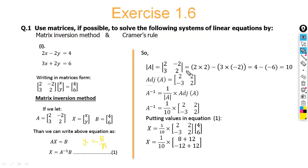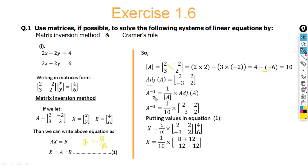The determinant of A with entries [2, −2; 3, 2]: multiply the diagonals — 2×2 = 4, and (−2)×3 = −6 but the two negatives make a positive, so 4 + 6 = 10. Determinant = 10. For the adjoint, we swap the first diagonal values (both are 2 here) and change the signs of the second diagonal: −2 becomes 2, and 3 becomes −3.